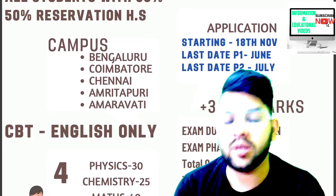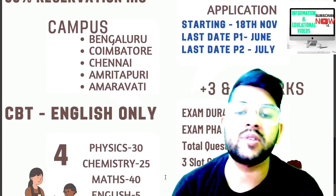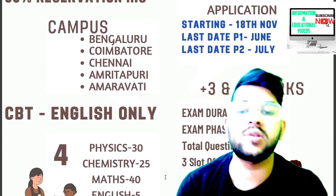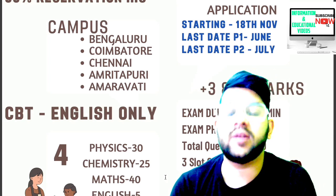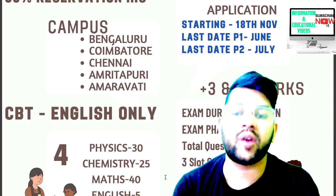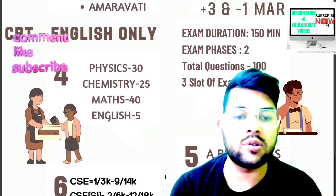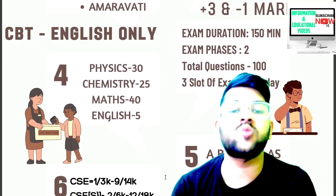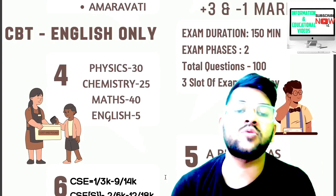The subject-wise question distribution is: Physics — 30 questions, Chemistry — 25 questions, Mathematics — 40 questions, and English — 5 questions, totaling 100 questions.